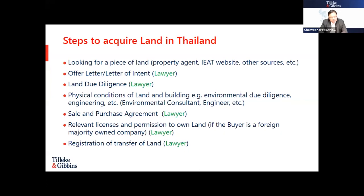The first step is finding a piece of land. This can be done through the IEAT website if you are planning to locate in an industrial estate area and want to enjoy IEAT privileges, or through connections you have in Thailand. The second step is the offer letter or letter of intent, to show your intentions to acquire the land. After that comes land due diligence, which is normally done by lawyers.